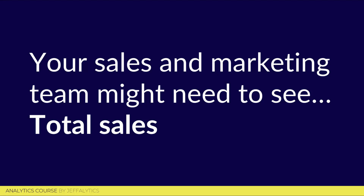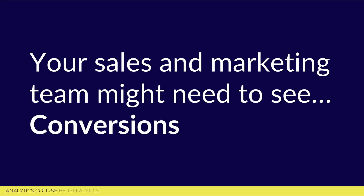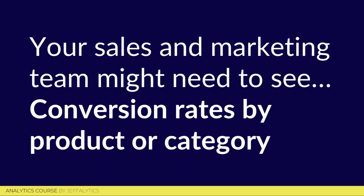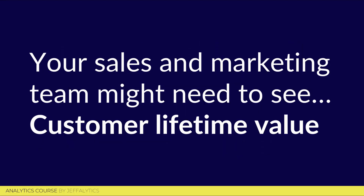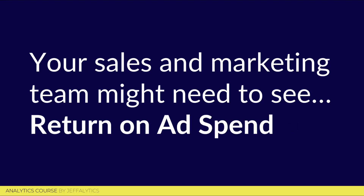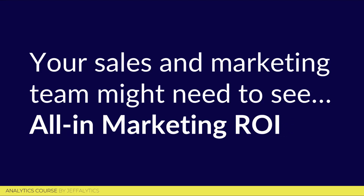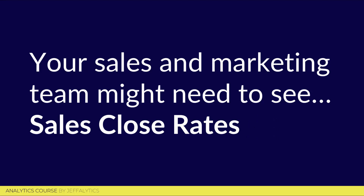For example, if your sales and marketing team wanted a KPI dashboard, they might be looking at KPIs like total sales, average order value, conversions, and conversion rates — the percentage of people who saw your marketing and then converted. If you want to get really advanced, you'll look at conversion rates by product, category, or demographics. You'll even get into customer lifetime value, the value of your leads, return on ad spend, overall marketing ROI, and sales close rates. There are hundreds of KPIs important to your organization, and you want to find the ones that matter most to your stakeholders.